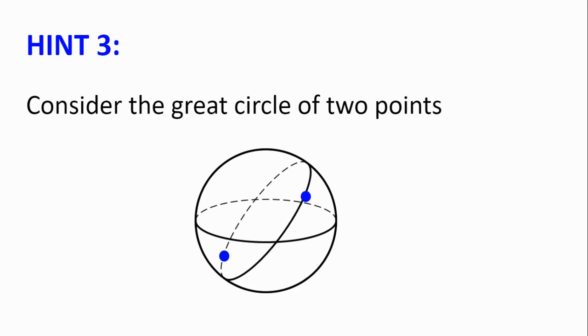Hint number three, consider the great circle of two points. So the great circle, or a great circle, is a circle on the surface of the sphere with the same centre as the sphere.